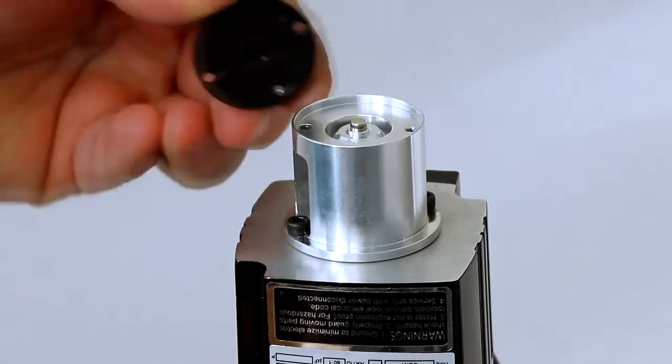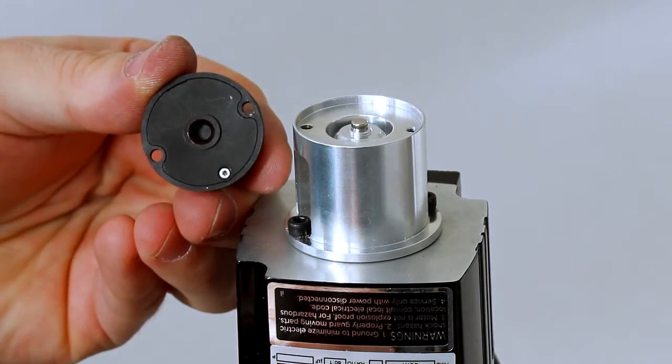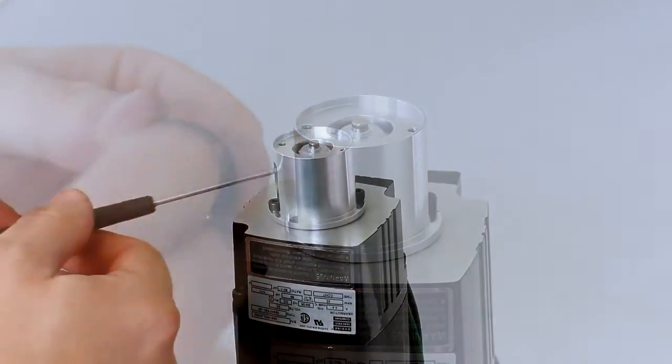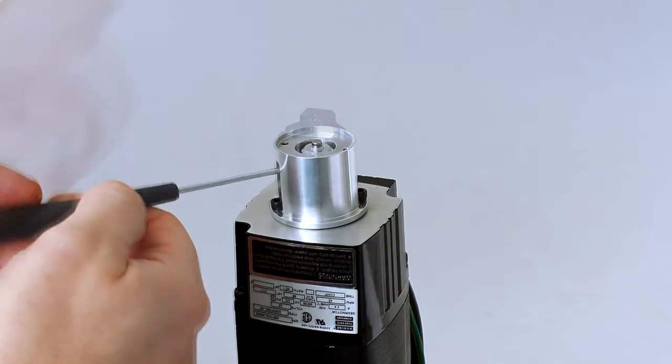Remove the encoder module. Carefully remove the gapping tool. It will likely be attached to the module. Tighten the set screw and reinstall the encoder module.